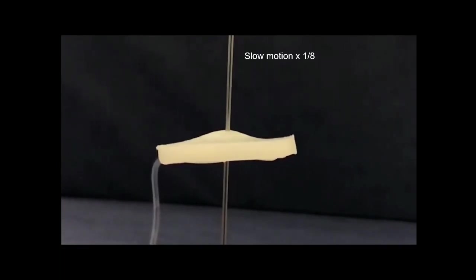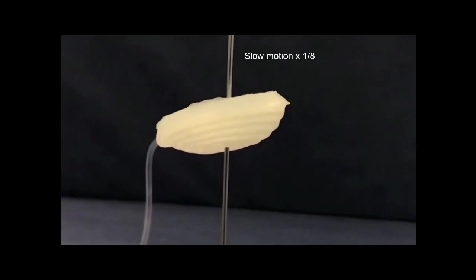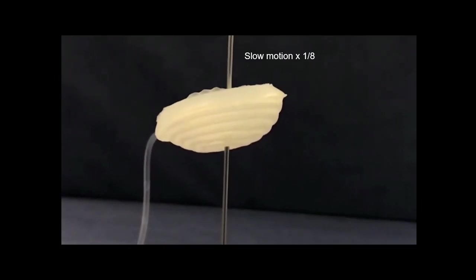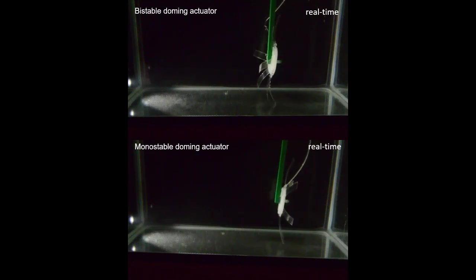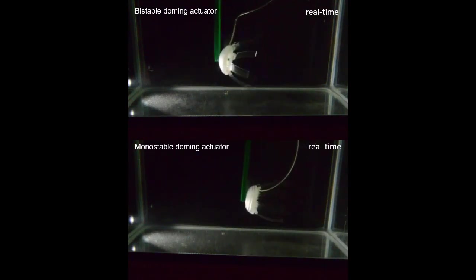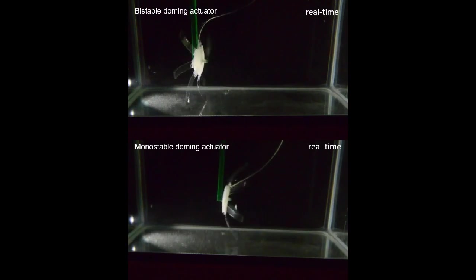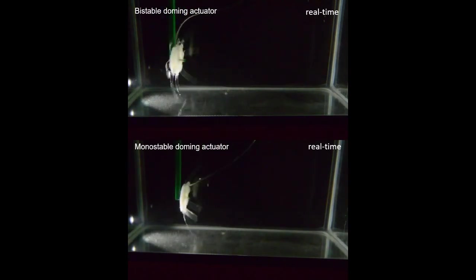In experimental testing, the jellyfish bot had an average speed of 53.3 millimeters per second. That's not bad, considering that none of the three jellyfish species the researchers examined went faster than an average of 30 millimeters per second.